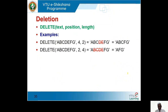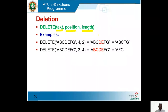Now let's move on to deletion. What is the meaning of deletion? Again, the given text is the first parameter, then the position and the length to be deleted — that means the length of the substring to be deleted. Let's consider two examples. The first is string A, B, C, D, E, F, G.